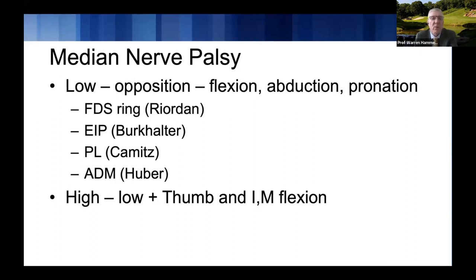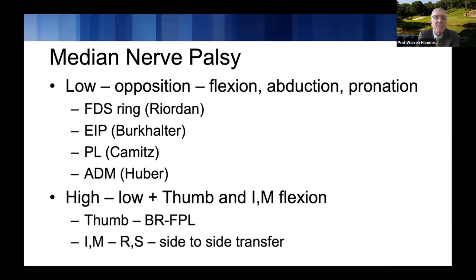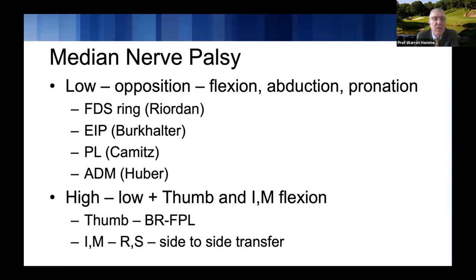For a high median nerve injury, you want to create opposition and also restore thumb flexion and index and middle finger flexion. Brachioradialis to FPL works very well — the brachioradialis is very strong, so it can help with forceful pinch. To recreate index and middle finger flexion, the easiest approach is to transfer the FDPs of the index and middle side-to-side to the ring and small, which are always ulnar nerve innervated, providing full composite flexion.